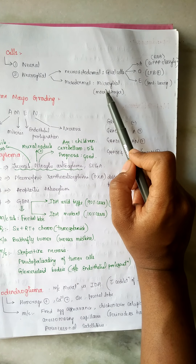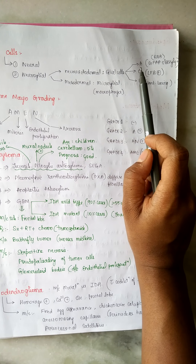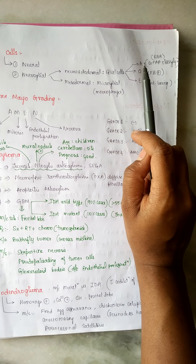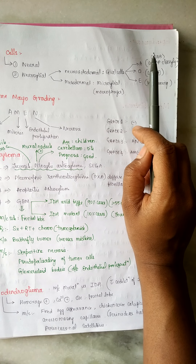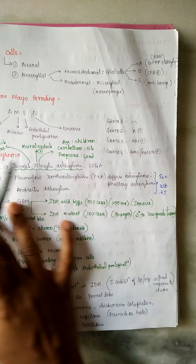Microglial cells are the modified macrophages. This is about the types of cells.